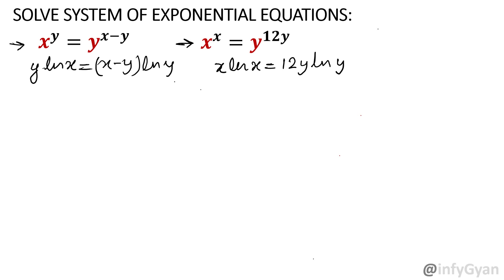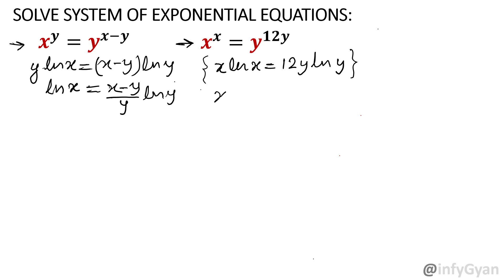So we have two equations. From the first equation, divide both sides by y to find ln x — that is what we want. So ln x = ((x − y)/y)·ln y. Now substitute this expression for ln x into the second equation. It becomes x·((x − y)/y)·ln y − 12y·ln y = 0.